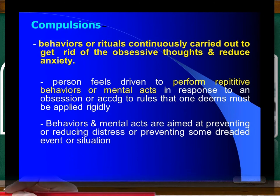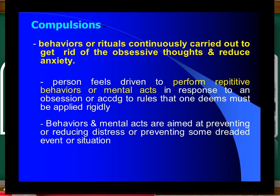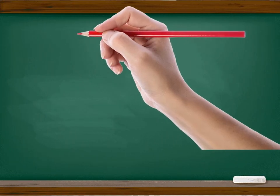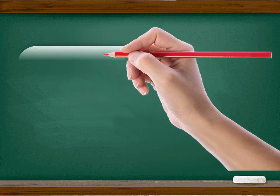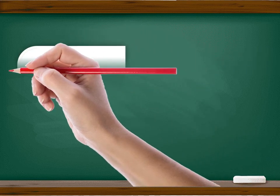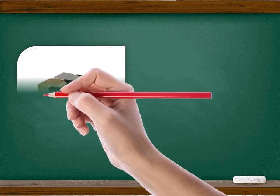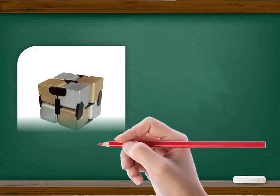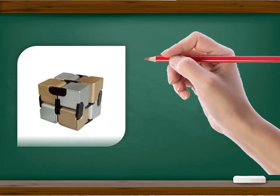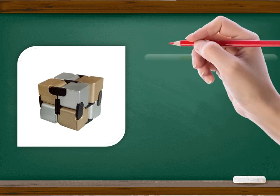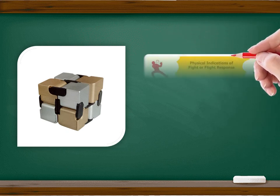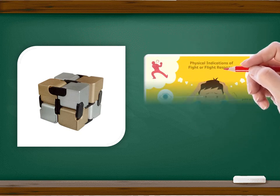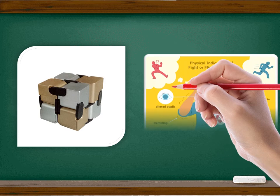Dissociative disorders: dissociation is the removal from conscious awareness of painful feelings, memories, thoughts, and aspects of identity. It occurs in extreme stress or trauma, and identity, memory, and consciousness are disturbed or altered. Individuals dissociate the abuse experience as well as feelings and needs associated with it in order to survive the ordeal psychologically and physically.